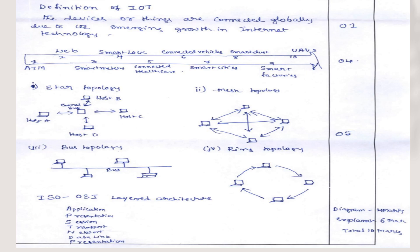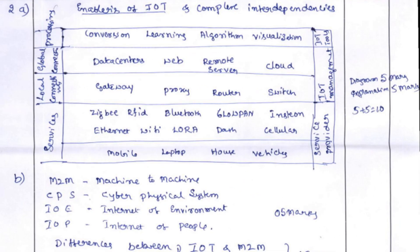In the all-choice question you had enablers of IoT and complex interdependencies. This is the diagram for complex interdependency showing how the gateway, Zigbee, RFID, Bluetooth, and others work — and how mobile and laptop work with conversion of algorithms. These are the enablers. The diagram carries 5 marks and the explanation for that complex interdependency carries another 5 marks, totally contributing to 10 marks.